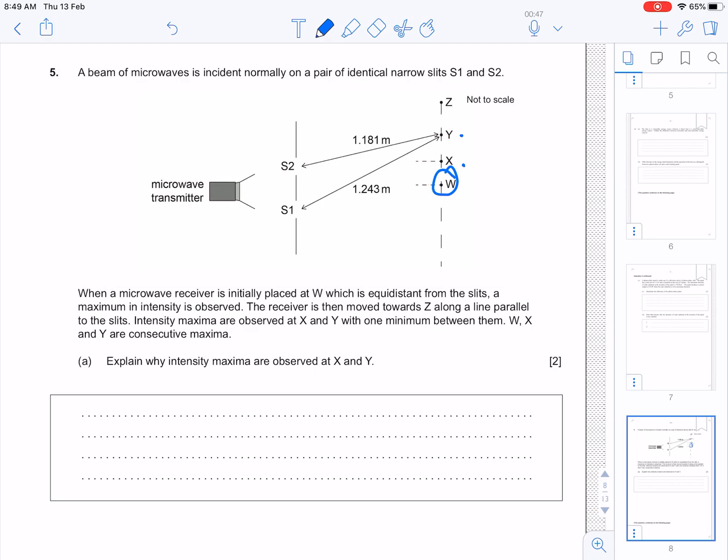That means that there's no other maxima in between these, just W, X, and Y. So, explain why intensity maxima are observed at X and Y.